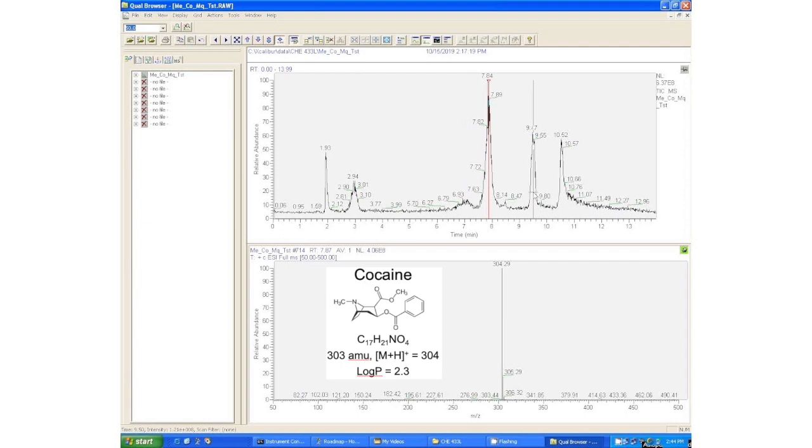So you can see here the structure for cocaine, the chemical formula, and if we take that C17H21NO4 and calculate the mass of cocaine we get 303. But because we're looking for positive ions here and we're doing electrospray, we're going to see the protonated molecule which is the mass plus an extra H+, and that's at 304. So that's what that peak is at 304, and the 305 is the isotope peak. So this is our cocaine peak.